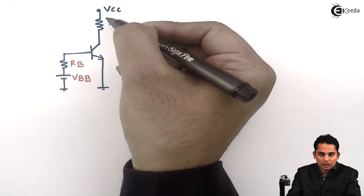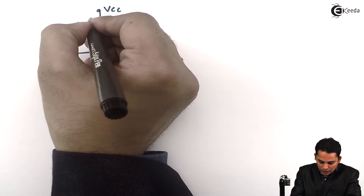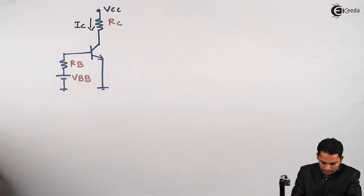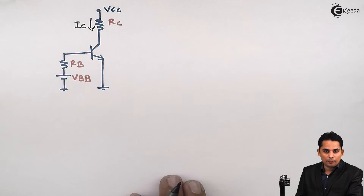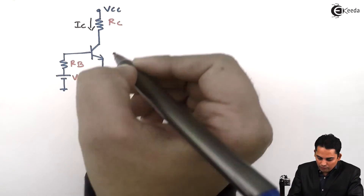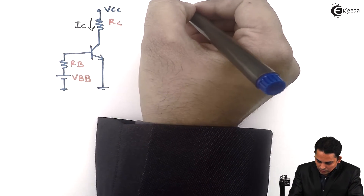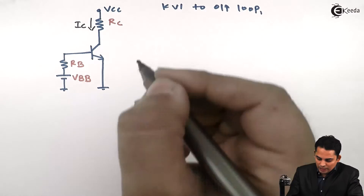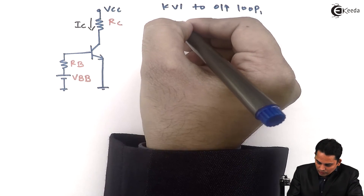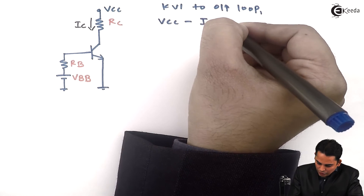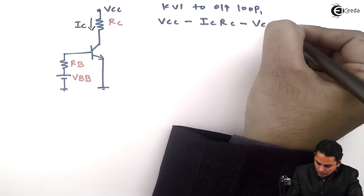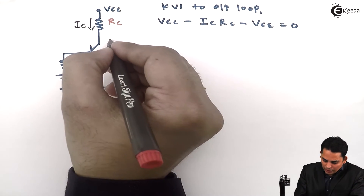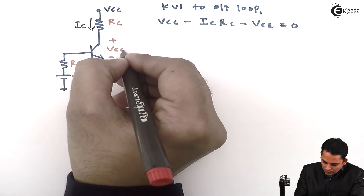Now we will apply KVL to the output loop. The output loop is from collector to emitter, and the current flowing from the collector is called IC. In order to obtain the DC load line, applying KVL to the output loop gives the equation: VCC minus IC times RC minus VCE equals 0, because the voltage between collector and emitter is called VCE.